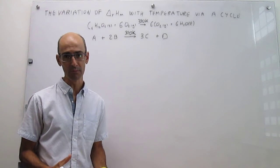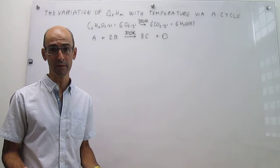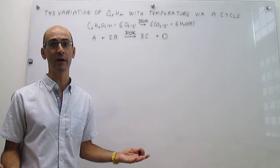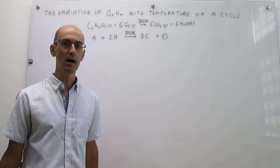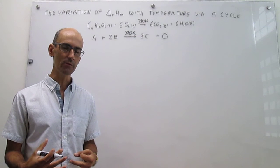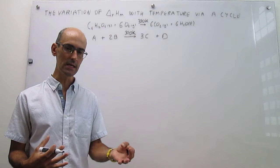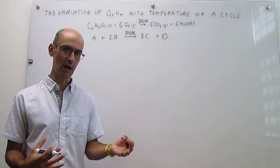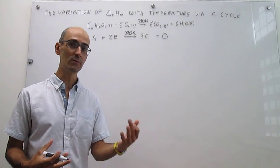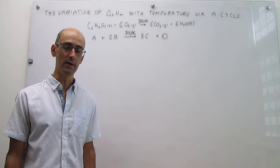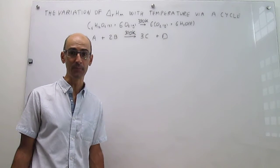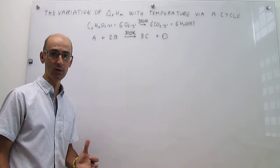The first problem is that we don't know the enthalpy of formation of products and reagents at 310 Kelvin, because the tables are at 298 Kelvin. The idea here is to use that data at 298 Kelvin to then determine what the enthalpy of the reaction would be at 310, and we're going to do that through a cycle.